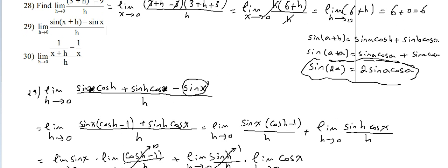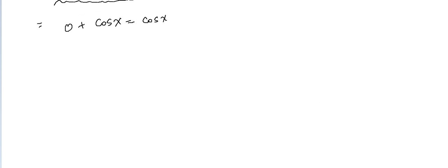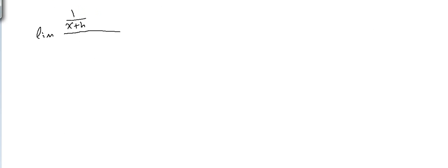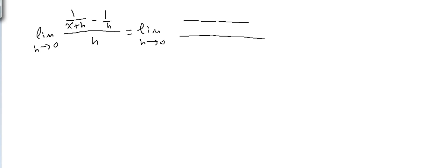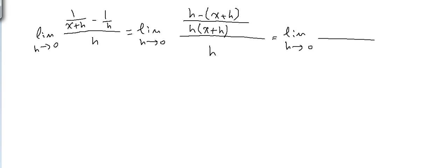Number 29's answer is cos(x). The last number is number 30: the limit as h tends to 0 of [1/(x + h) − 1/x] over h. We find a common denominator, which is x(x + h), and what's left on top is x minus (x + h).